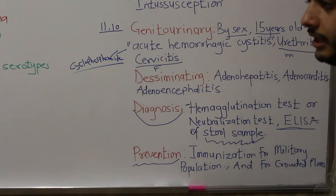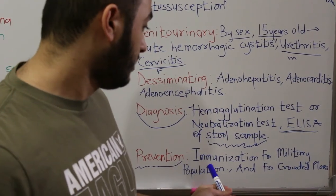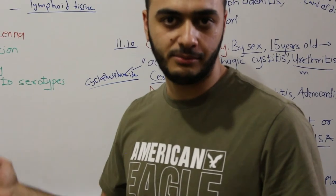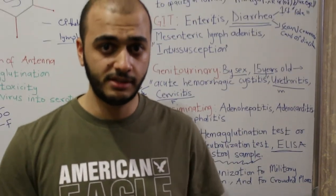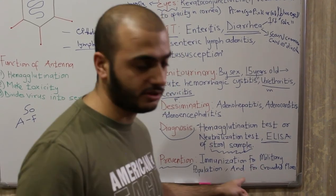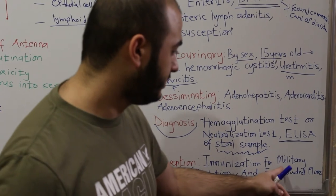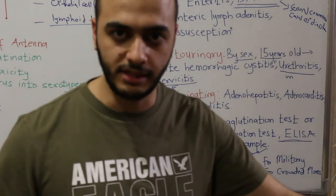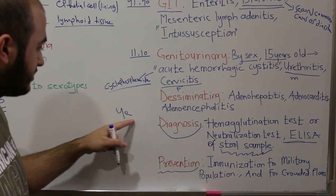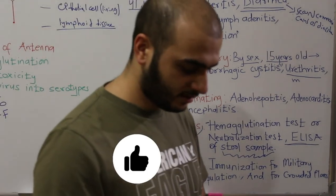For prevention, there is no efficient treatment for this virus. There is a vaccine available, but since there are around 50 serotypes we cannot give all vaccines to everyone. Vaccines are typically given to military populations, and not against all serotypes — only those most common in a given area. For example, if serotype 14 is common in a region, immunization against that serotype is given to the military population.